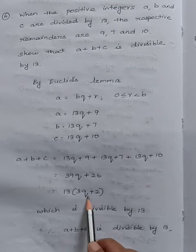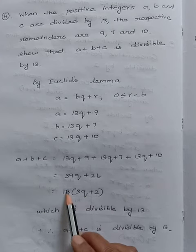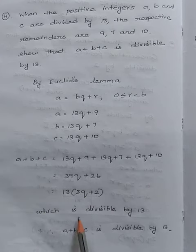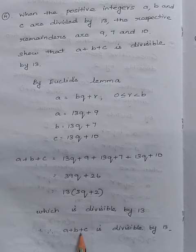When we divide this by 13, the 13s cancel, which shows it is divisible by 13. Therefore, a plus b plus c is divisible by 13.